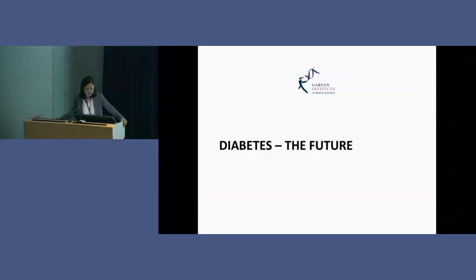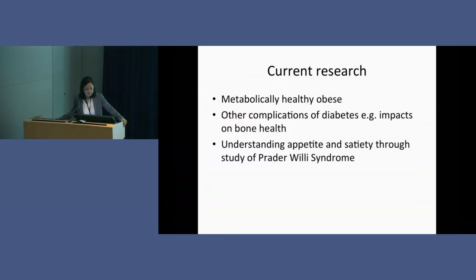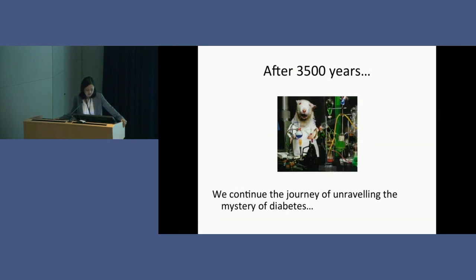To end, a brief taste of some of the research I'm involved in. We are interested in looking at metabolically healthy obese people — those who seem protected from diabetes despite being as overweight as people who have it. We're also beginning to understand that diabetes probably affects bone health, which is another topic altogether. And we're studying appetite and satiety — for instance, Prader-Willi syndrome, an inherited condition that changes appetite and satiety. After three and a half thousand years, we continue the journey of unravelling the mystery of diabetes.